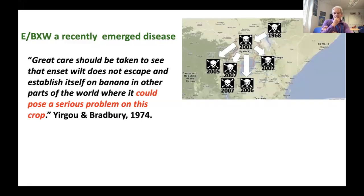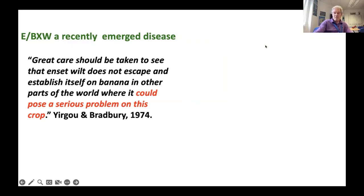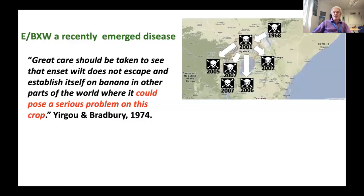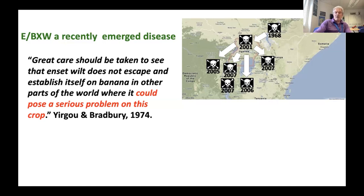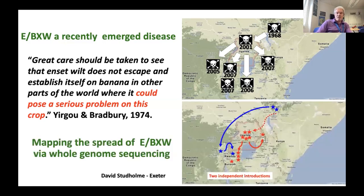My colleague David Studden-Nexter and myself were looking at this. It got out of Ethiopia, identified in Uganda in 2001, and subsequently spread around East Africa. We've been able to use genomics to map the spread of this, and we've been able to show there were two independent outbreaks simply by doing whole genome sequencing. I just want to use that to reinforce the importance of genomics in any sort of biosecurity work.